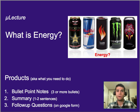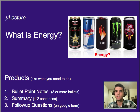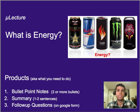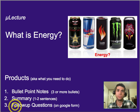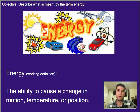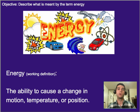Before we talk about power and efficiency, let's talk about what energy is. We've talked about a couple different types of energy, specifically potential and kinetic. By potential I mean gravitational potential energy, although we did allude to other types of potential. Let's firm up what we mean by the term energy. The working definition we had before was the ability to cause changes in motion, temperature, or position.